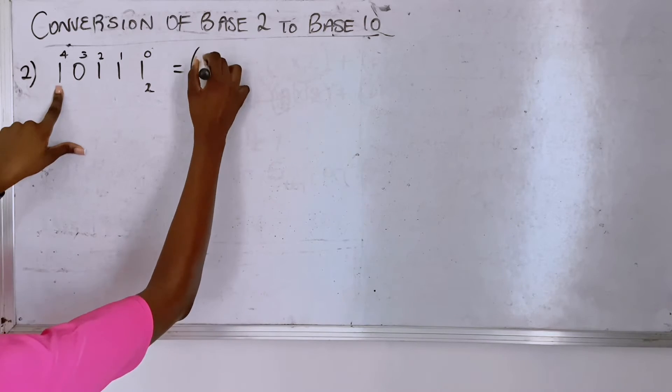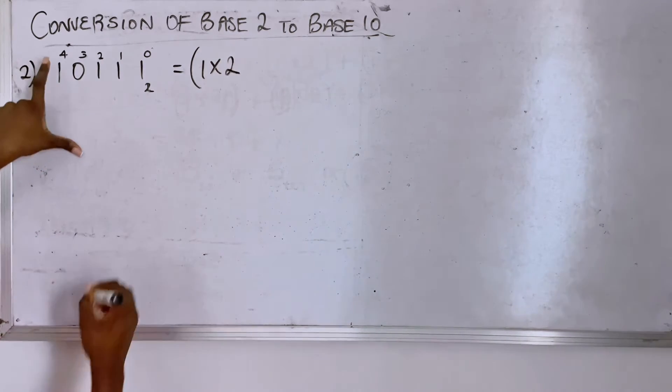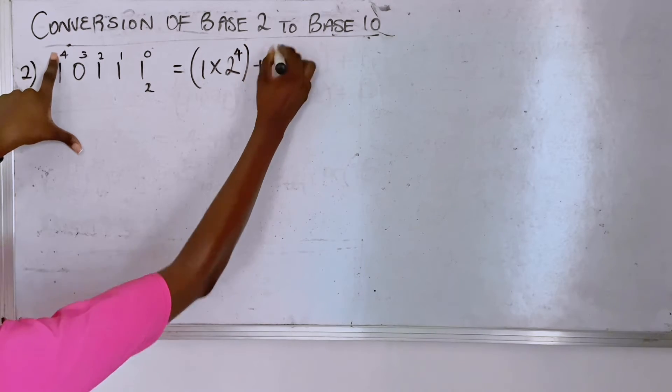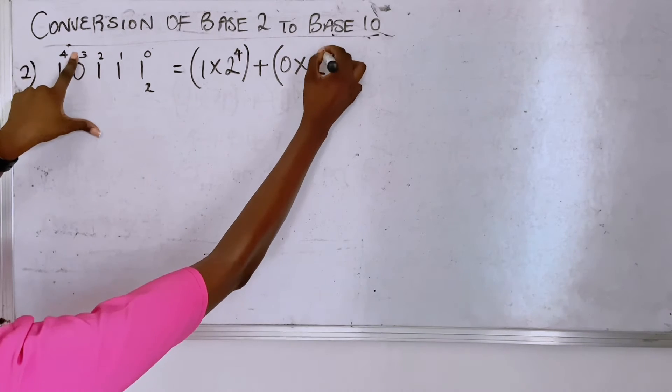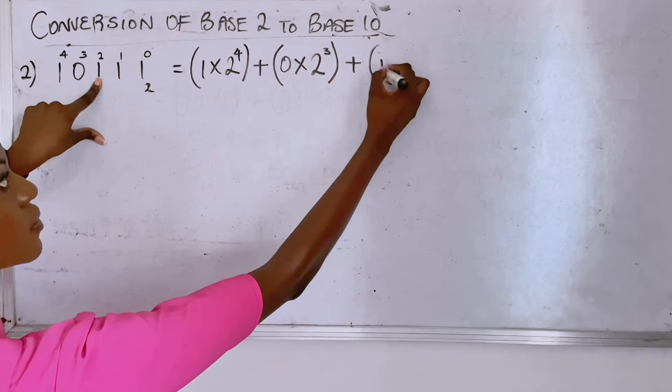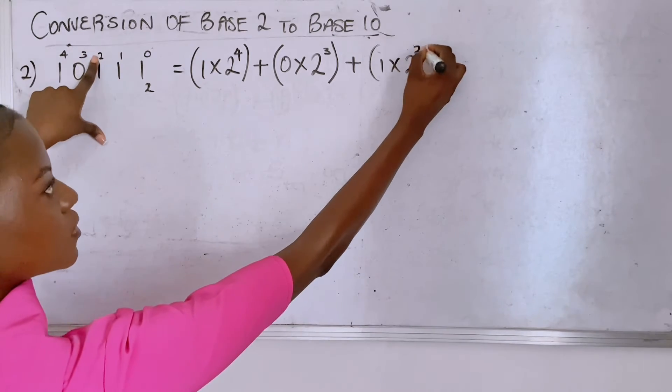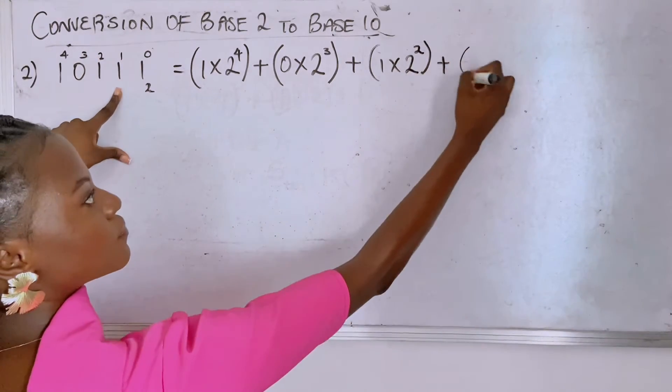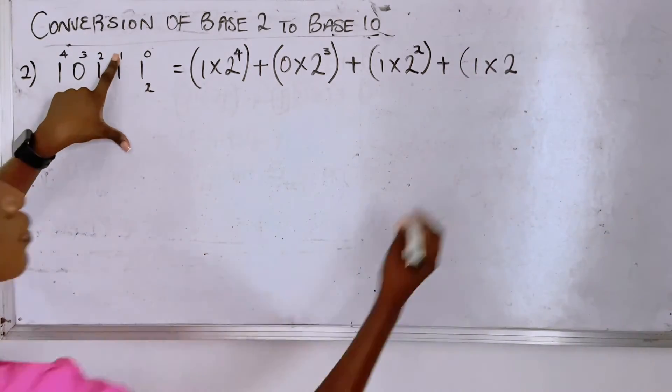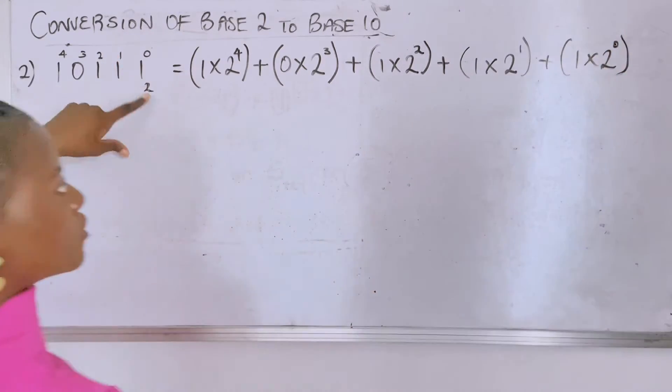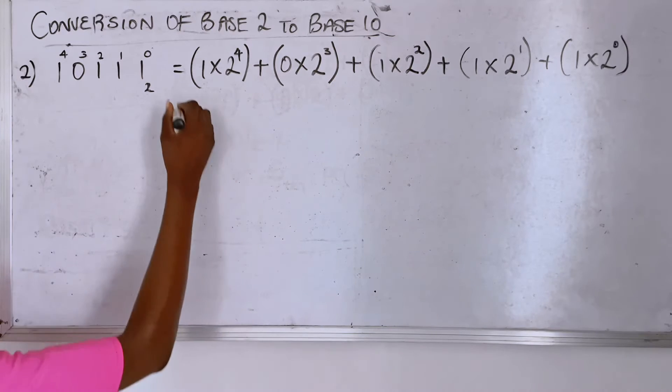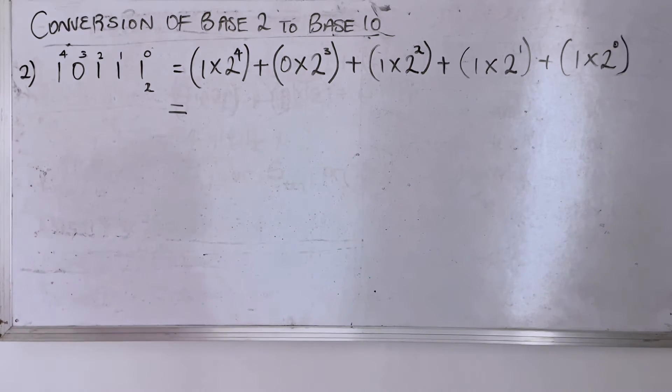Plus zero times your base raised to the power on zero, one times your base raised to this, one times your base raised to this, and then one times your base raised to this. So just have this at the back of your mind that this is how you have to go about it if this is the method you like. So moving on, you have one times two raised to the power of four.